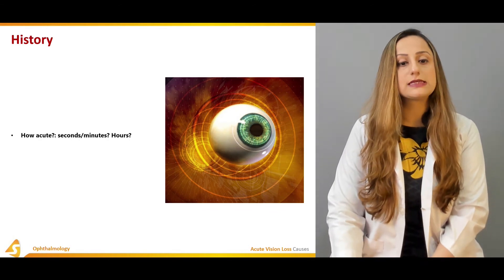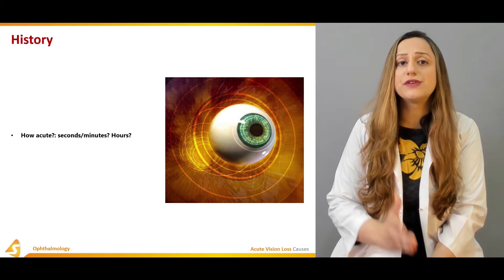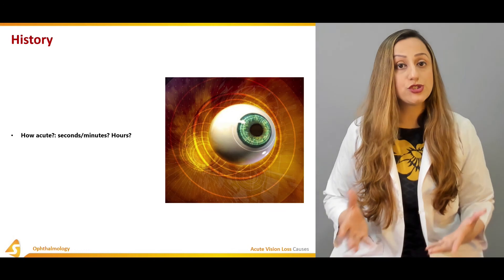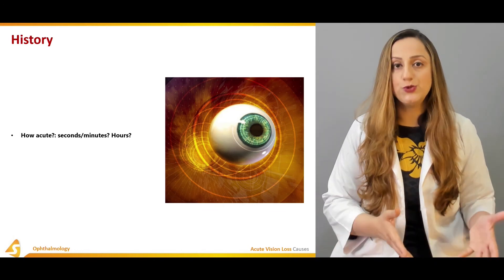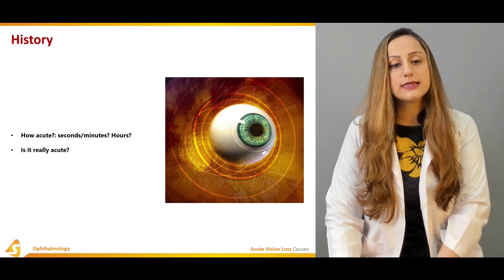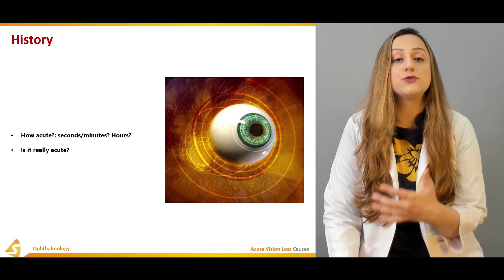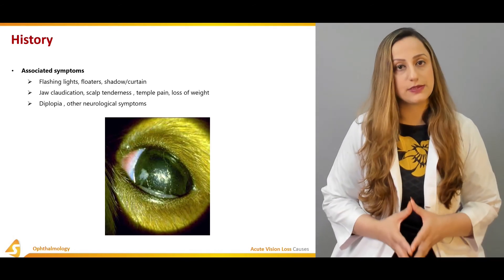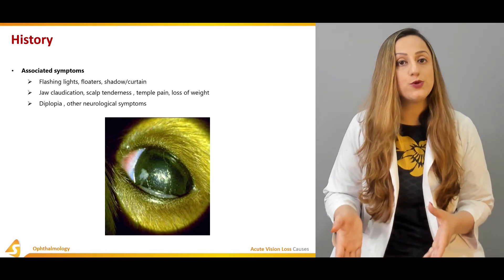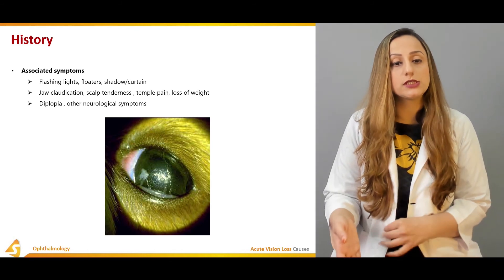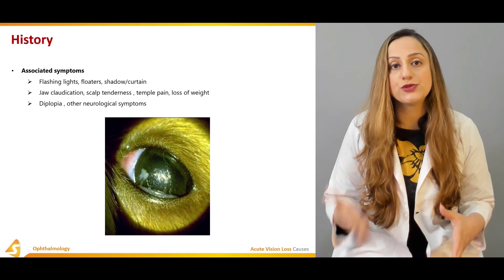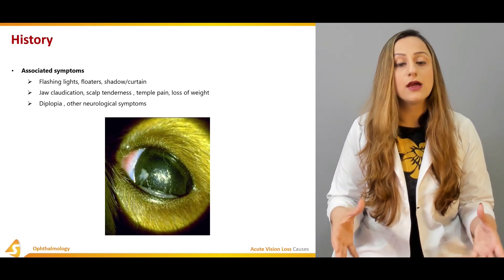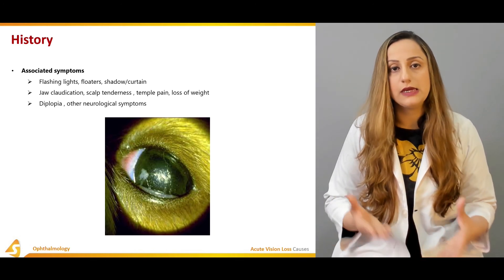History taking is essential in these patients. Key questions include: how acute is the onset — was it over seconds, minutes, or hours? This helps categorize the vision loss as acute, subchronic, or chronic. Associated symptoms such as flashing lights, floaters, and shadow curtains relate to optic neuritis. Jaw claudication, scalp tenderness, temple pain, and loss of weight can point towards infectious or inflammatory causes.